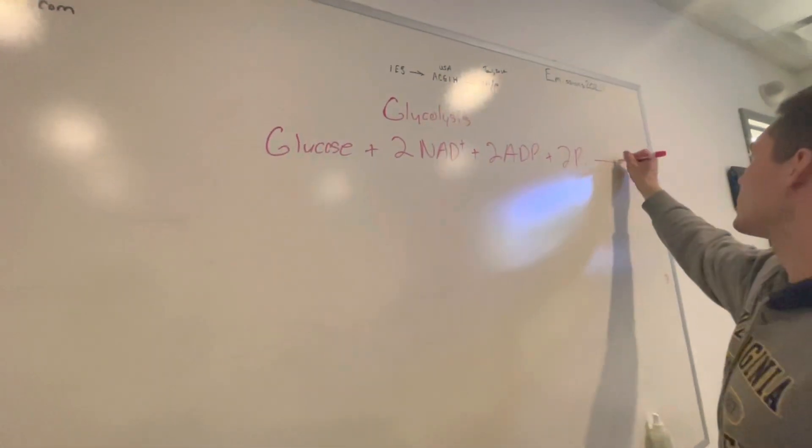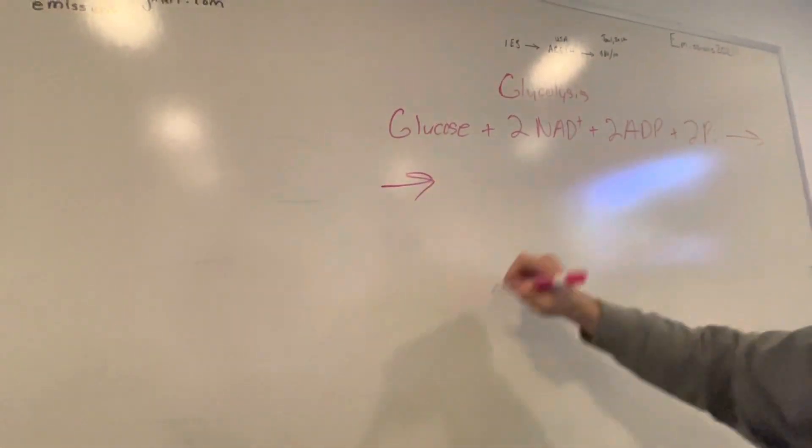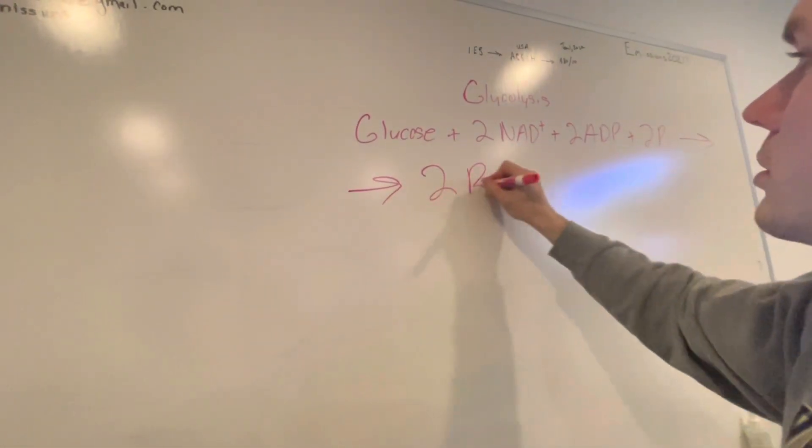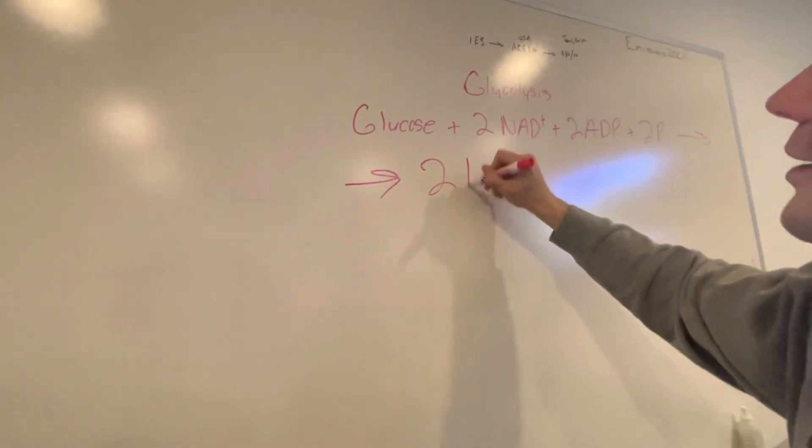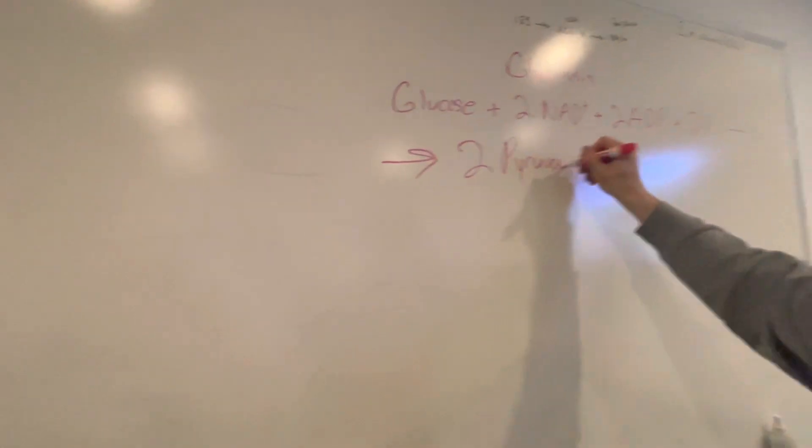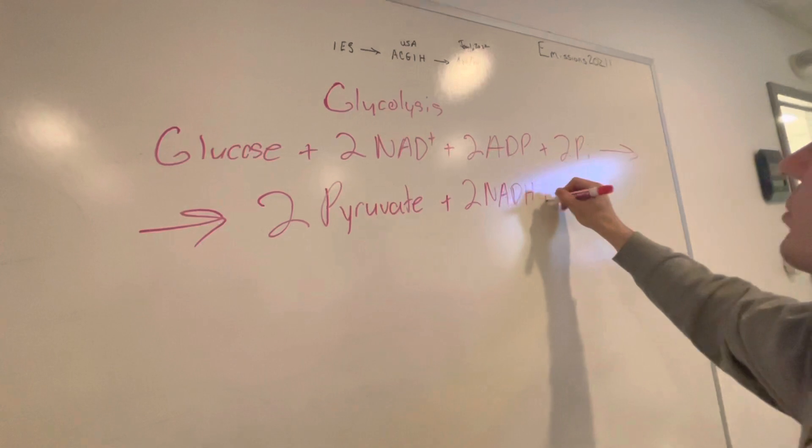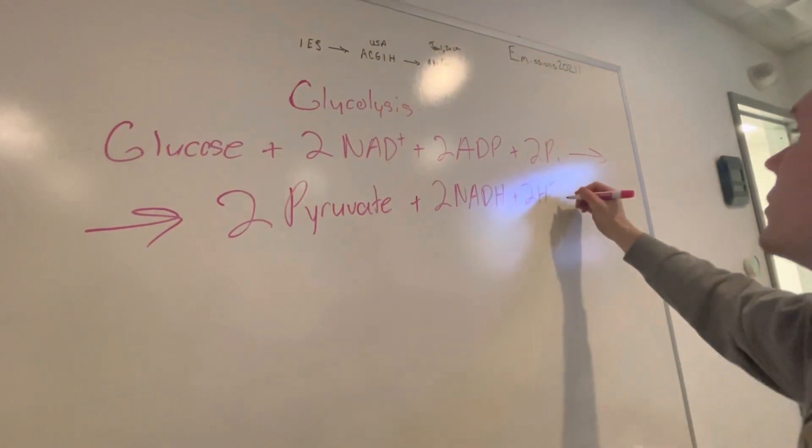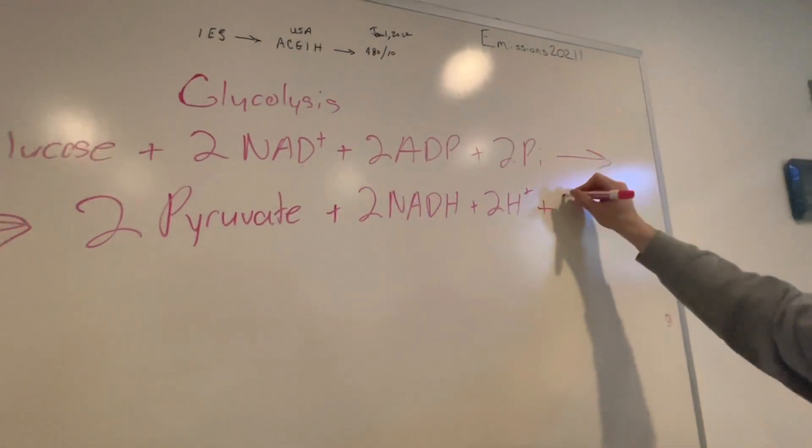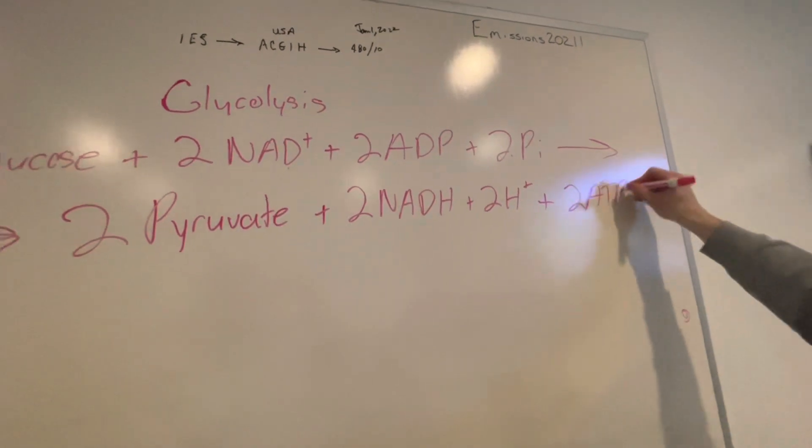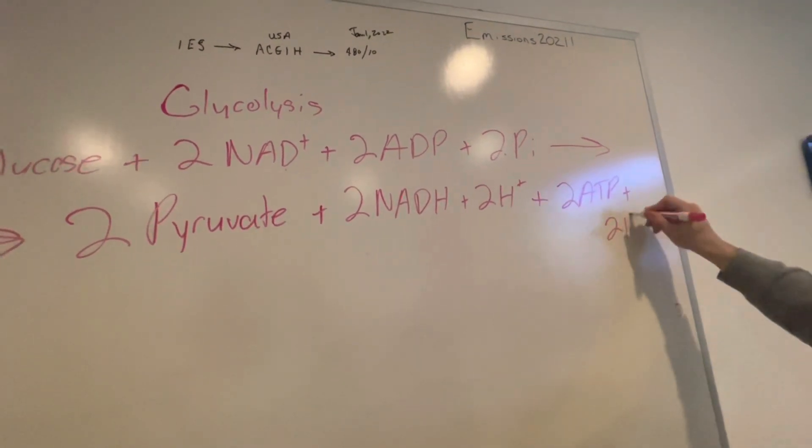And then, on the bottom, carry down here, and we end up ending with 2 pyruvate. 2 pyruvate and 2 NADH plus 2 H+ and 2 ATP and 2 water.